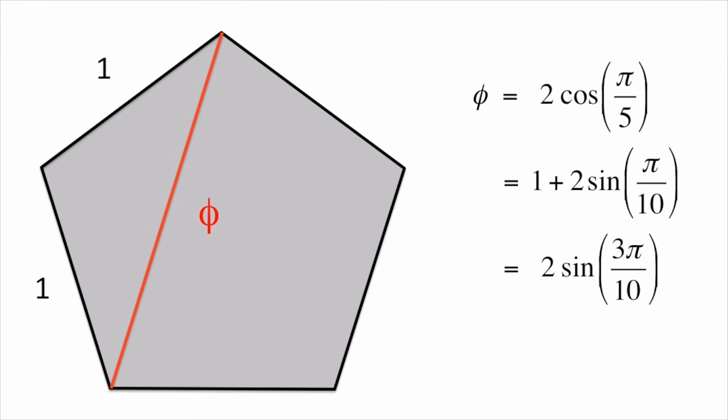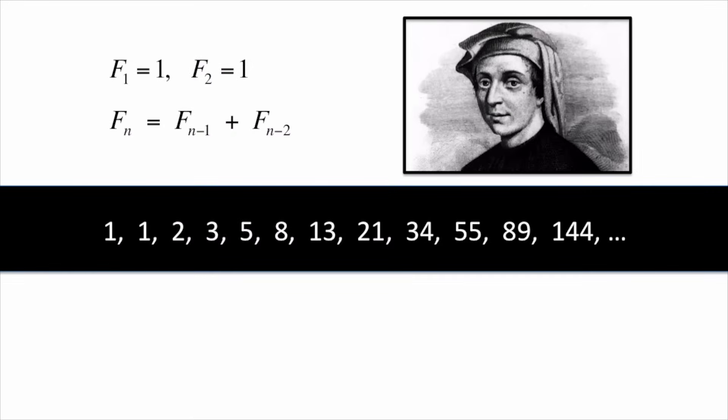People today often first encounter Phi with its connection to the famous Fibonacci numbers. By taking the ratio of consecutive Fibonacci numbers, the limit of these ratios approaches Phi.